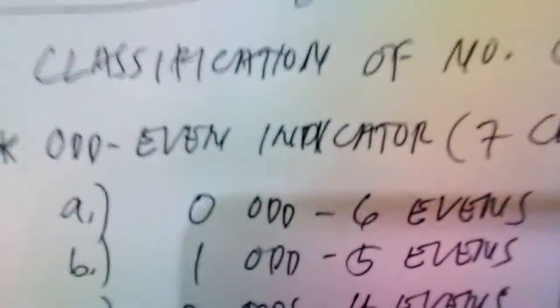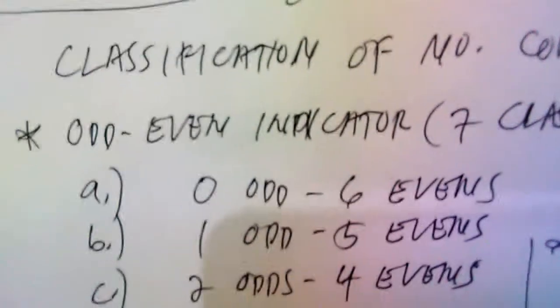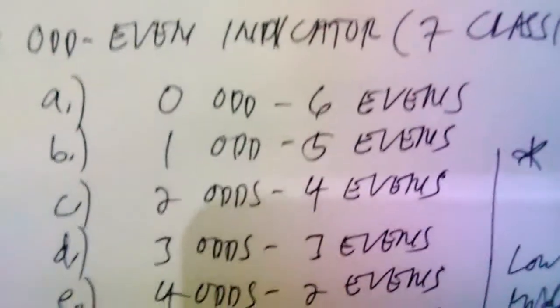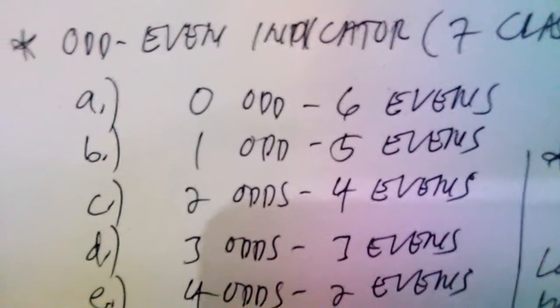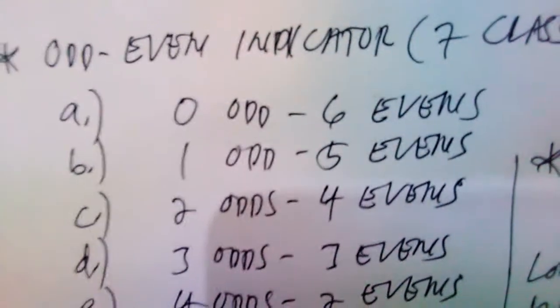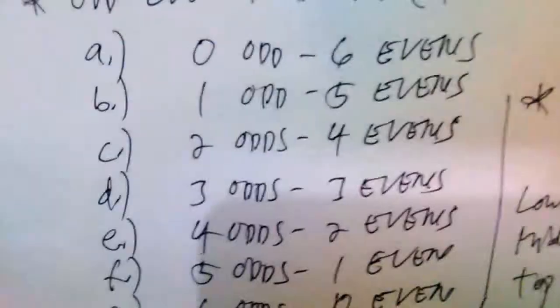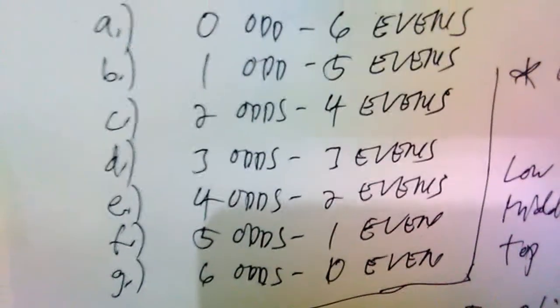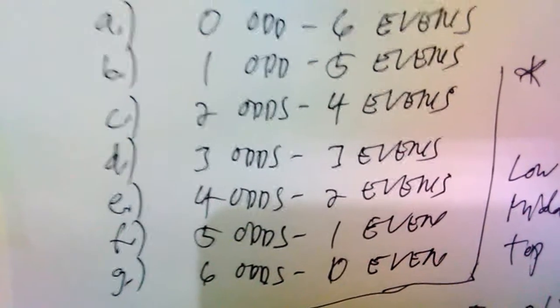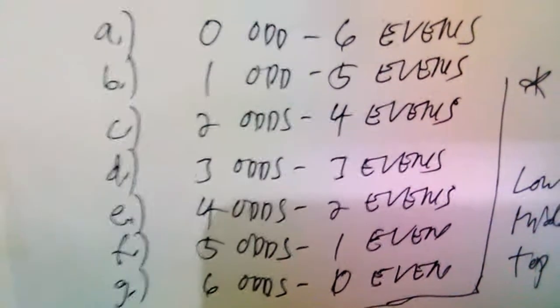The six numbers we choose in 6/42 could be: zero odd and six even — meaning all are even numbers; one odd and five even; two odd and four even; three odd and three even; four odd and two even; five odd and one even; or six odd and zero even.